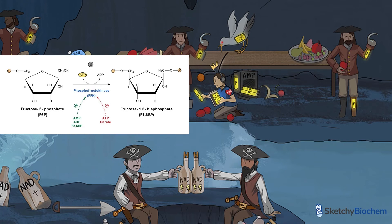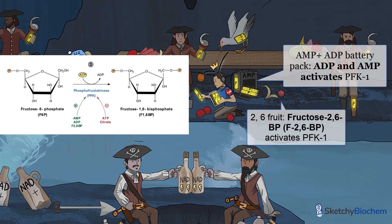What about revving up PFK1? AMP, ADP, and fructose-2,6-bisphosphate are all allosteric activators. High AMP and ADP levels mean that cells don't have enough energy and have used up most of their ATP. Therefore, AMP and ADP activate PFK1 to stimulate glycolysis and make ATP. PFK1 is also activated by fructose-2,6-bisphosphate, or F2,6-BP, which is produced by a separate enzyme called PFK2. We'll explain why when we talk about gluconeogenesis.